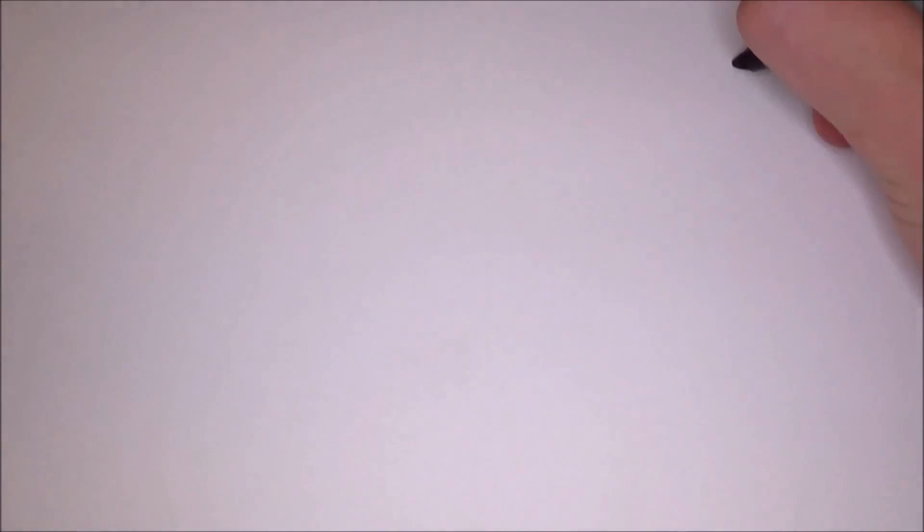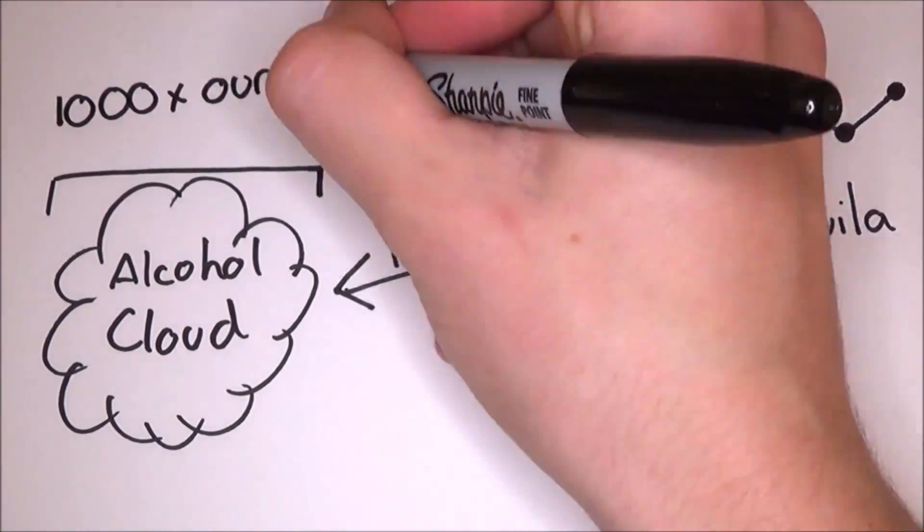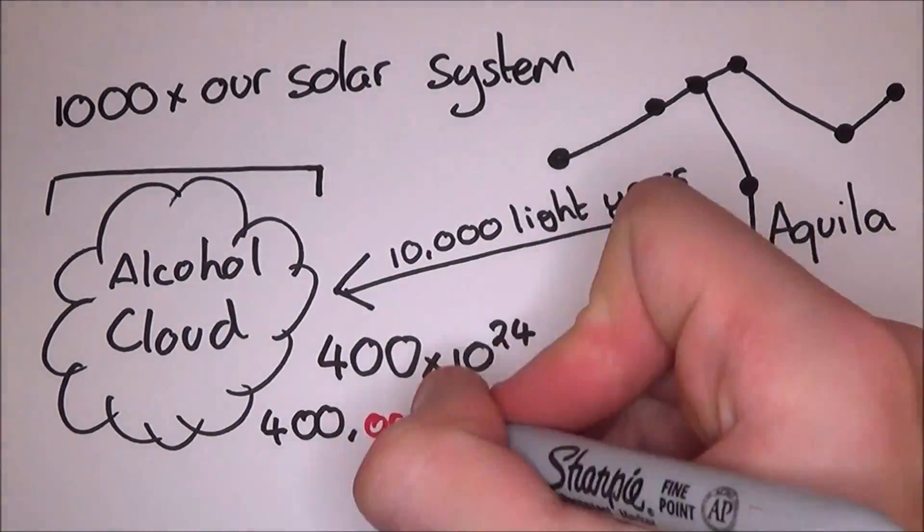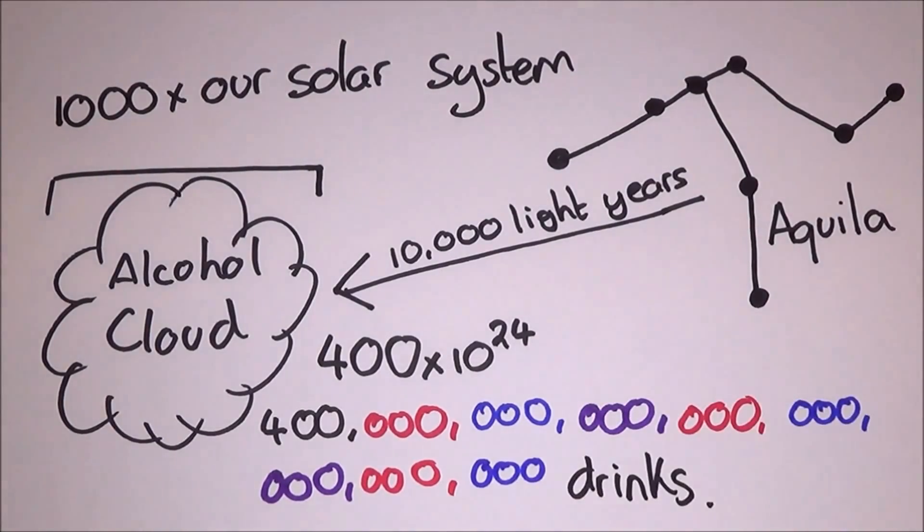Number 3 is the Intergalactic Kegger. About 10,000 light years away from Aquila, there is an alcohol cloud, which is over 1,000 times larger than our solar system, and it has enough alcohol in it to make 400 times 10 to the 24 drinks. That's a lot of drinks.